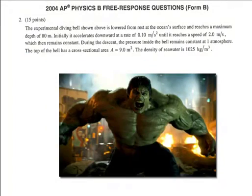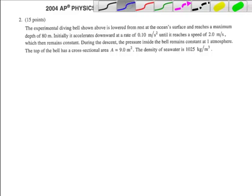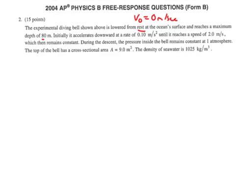I want to show you a great problem that shows up a lot — you'll probably be tested on this type. An experimental diving bell — just meaning some person's inside — is lowered from rest. That is a big term: 'from rest.' I'm going to underline that because it tells me my initial velocity is equal to 0 meters per second. That is a lot of information right there. It starts from rest and reaches a maximum depth of 80 meters, so my full distance equals 80 meters.